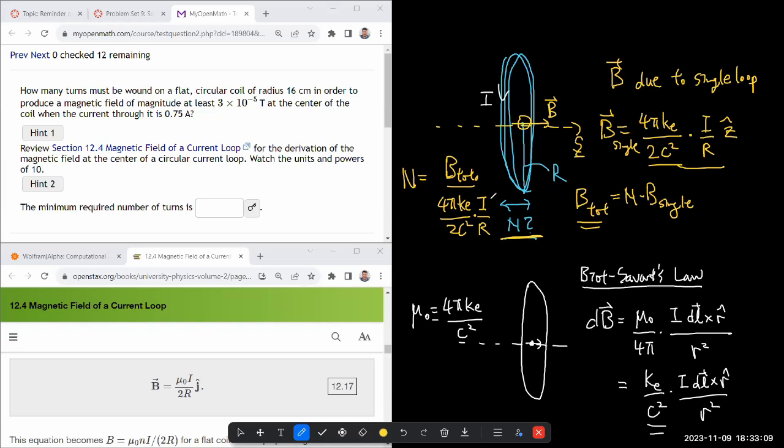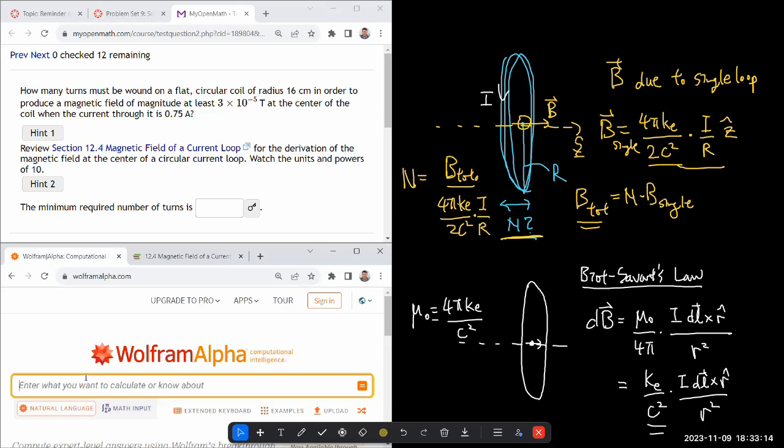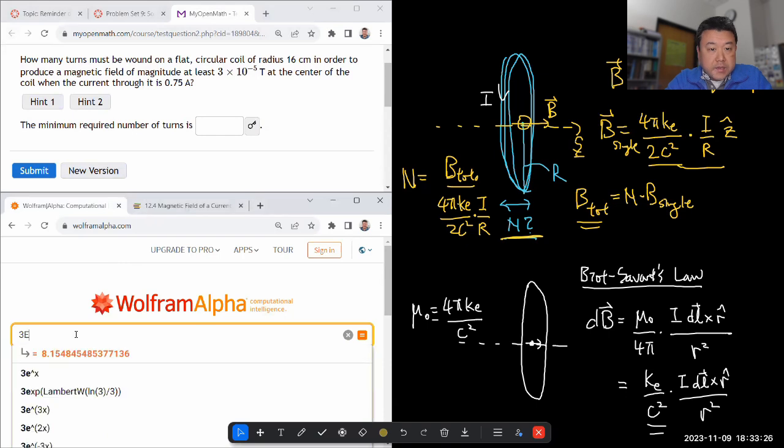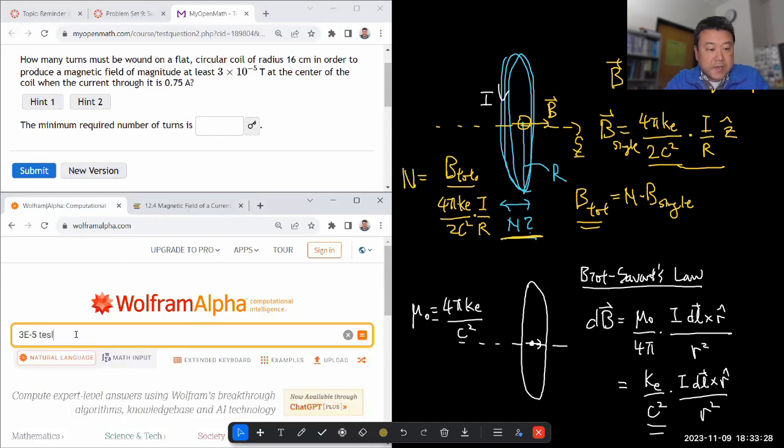So when I plug that into Wolfram Alpha, and I like using Wolfram Alpha because I don't have to look up constants, I put in the parameters. 3e minus 5 tesla divided by big parenthesis, 4π times Coulomb's constant.